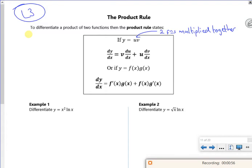And bring this back up. Right then. So many books will do it as U dV dX plus V dU dX. I do it as first bit times by the second bit differentiated plus the second bit times by the